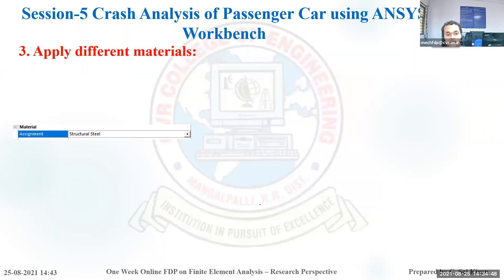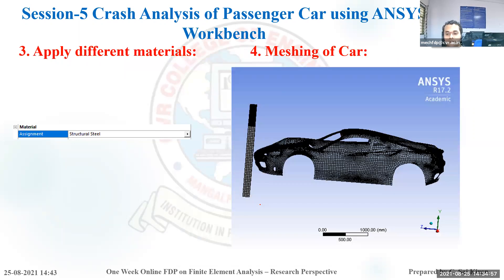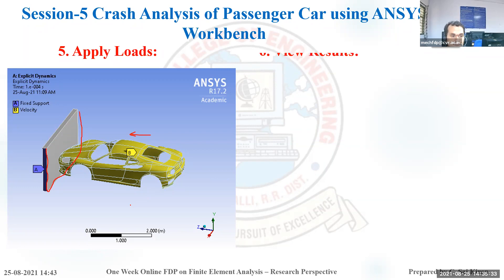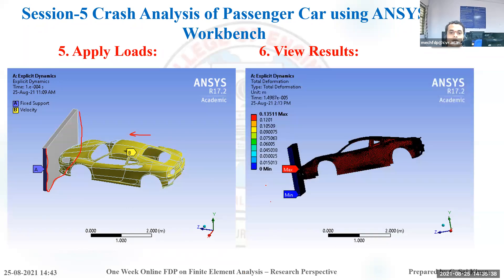We assign materials — steel, aluminum alloy, titanium alloy, fiber, or carbon — in the workbench. We perform meshing of the car and apply two loads: a fixed support on the wall (made of concrete, completely fixed) and a velocity applied on the car body. The car then hits the wall, and the total deformation result was 0.135 meters.